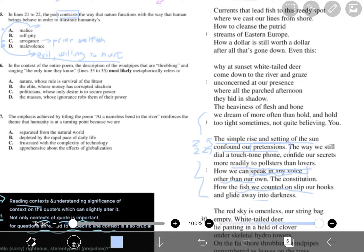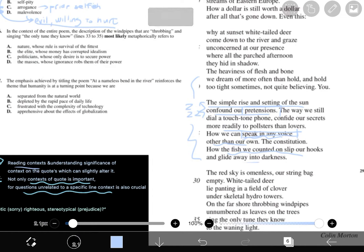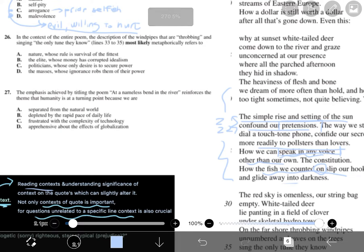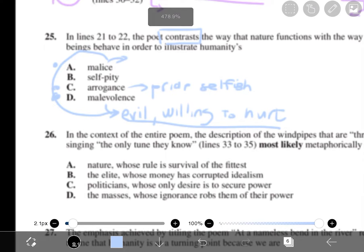Pretensions. Confide. Dial a phone. Speak in any voice other than our own. Fish we counted on. Not just the fish we count, like five fish. But the fish that we trusted, slip and glide away. Now, I know that the answer is still not clear. But here's the other thing that I'm gonna go with this. Because malice and malevolence is so similar, and especially we don't have a dictionary right in front of us, if A and D are so similar, and we have to pick between A and D, there's a good chance that A and D is not the right answer. Because they're just so similar. How can you discern between them?